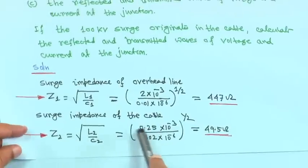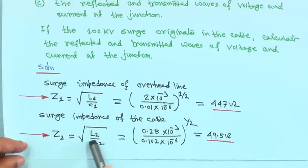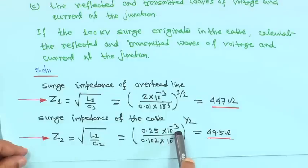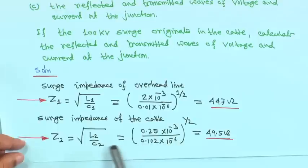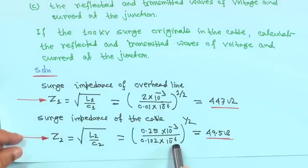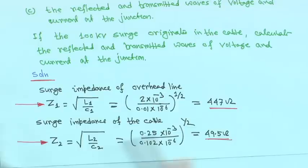Similarly, surge impedance of the cable Z2 equals root over L2 upon C2. L2 is 0.25×10⁻³ henry and C2 is 0.102×10⁻⁶ farad. Taking the square root gives Z2 equal to 49.5 ohms.